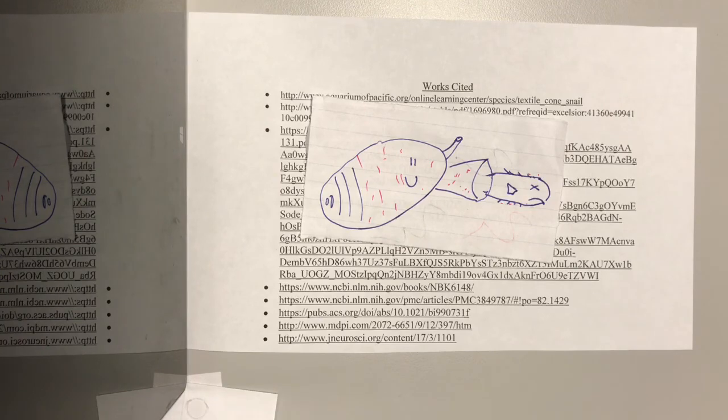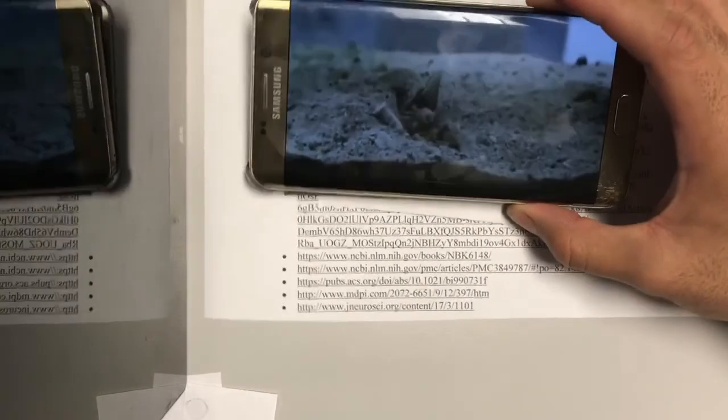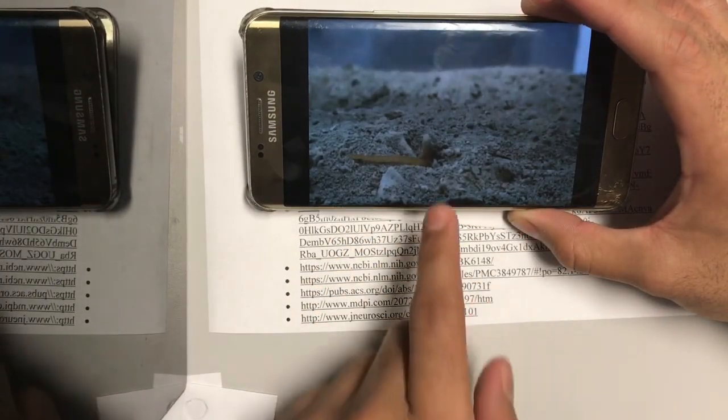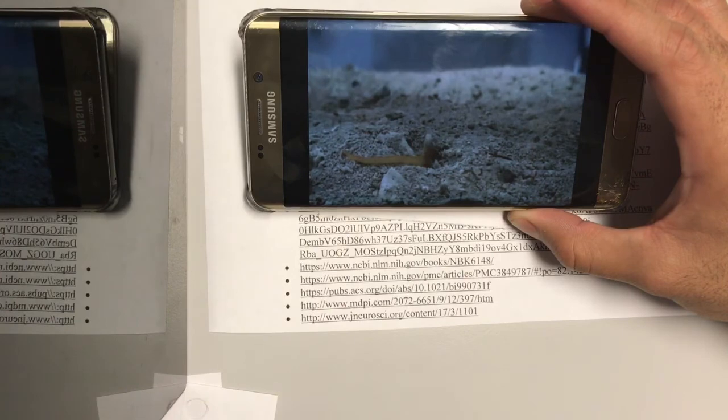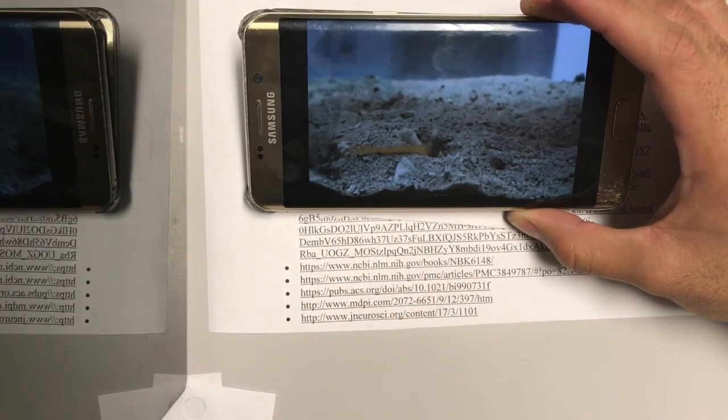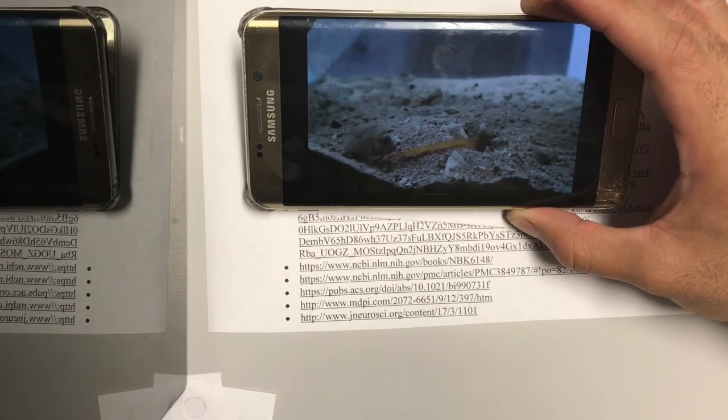And to finish it off, here's a video of a cone snail eating a fish. Alright, so the cone snail's right there, you can see its siphon, and it's looking for the fish. The fish is right there,